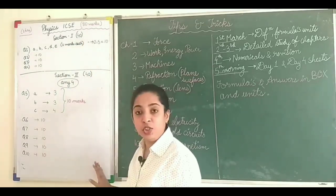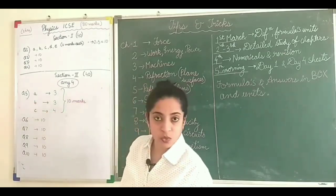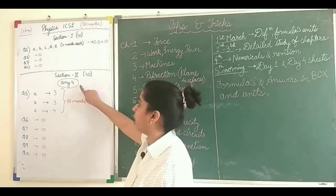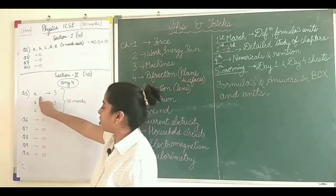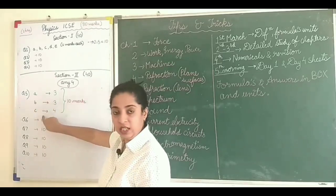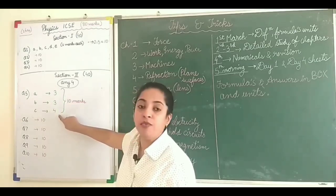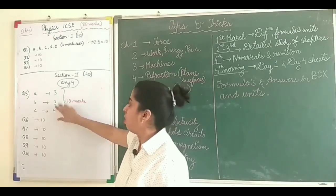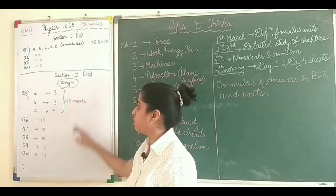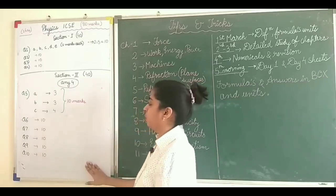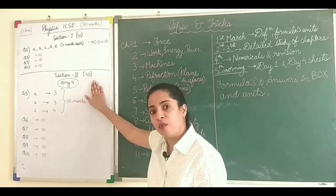Now in section 2, you will be having questions from 5 to 10, that is total of six questions out of which you have to attempt any four. Now in section 2, each question will be divided into three parts A, B and C. A will carry three marks, B will carry three marks and C will carry four marks. So one question contains 10 marks. So similarly all the rest question contains 10 marks. So you have to do any four questions. So 4 into 10 is 40. So this way section 2 is also 40 marks.